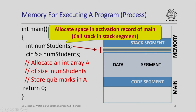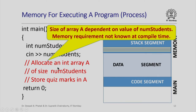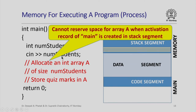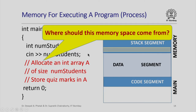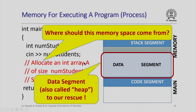If I look at array A that I want to allocate, its size depends on the value of numstudents that I am going to read from the user. As a result, I do not know how much memory I will require at compile time. Consequently, I cannot reserve space for this array A when the activation record of main is created in the stack segment. Only after main starts executing can I figure out what the value of numstudents is, and only then would I know how big this array A is going to be. So where should the memory space for this array A come from? It turns out that here is where the data segment — also called the heap — comes to our rescue.